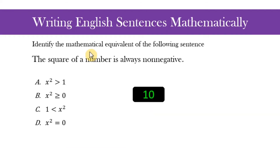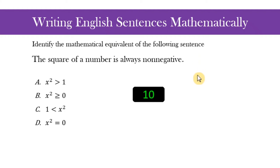Our next task is to write the following English sentences mathematically. I will give you time to think about the correct answer and then provide it after. You may pause the video if you need more time. Let us start — the first one: the square of a number is always non-negative.